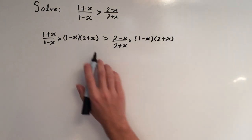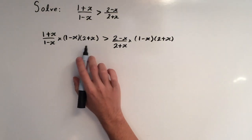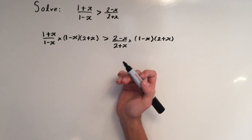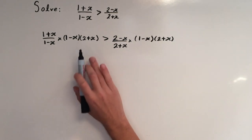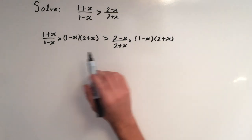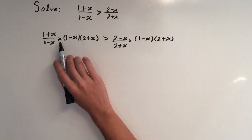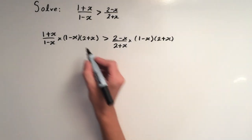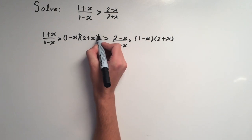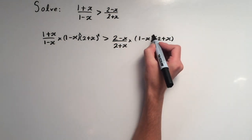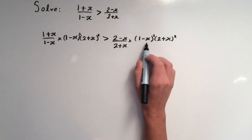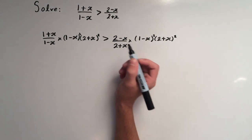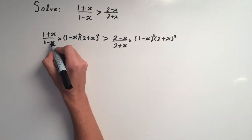We need to be careful because x could be any number — positive or negative. When you multiply an inequality by a negative number, the sign changes. So we need to ensure that what we're multiplying by is always positive. The way we do that is to square these brackets, so now they are always going to be positive and we don't need to worry about the sign.